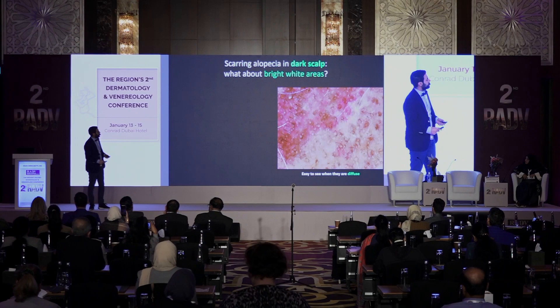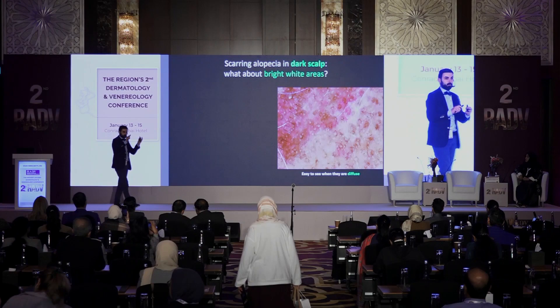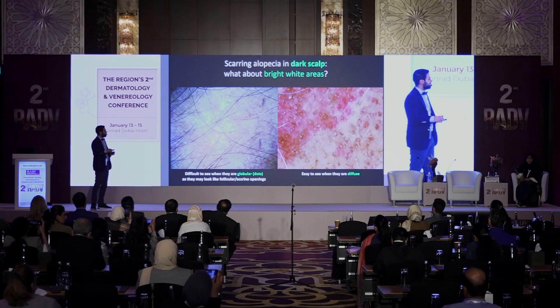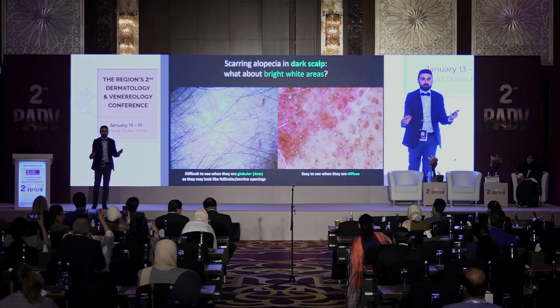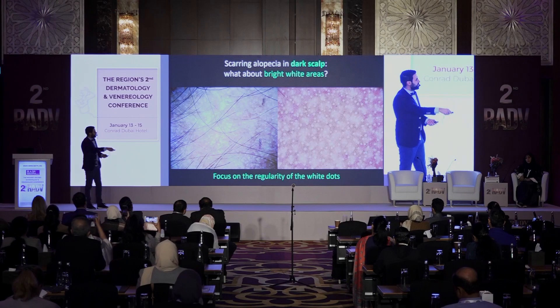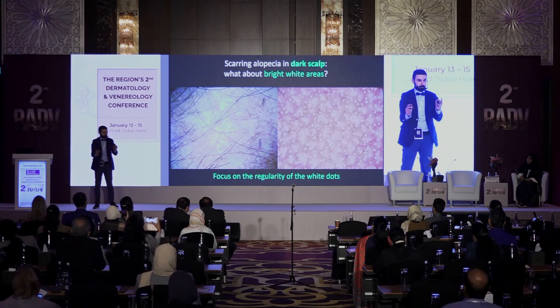In dark scalp, diffuse bright white areas are easy to see because of the higher contrast with the surrounding pigmented skin. But when we have white globules or white fibrotic dots, fibrosis may be mistaken for follicular or eccrine openings. What we have to evaluate is the regularity of these white dots: in scarring alopecia they are irregularly distributed, while in non-scarring alopecia they are very regularly distributed. The distribution is the clue.